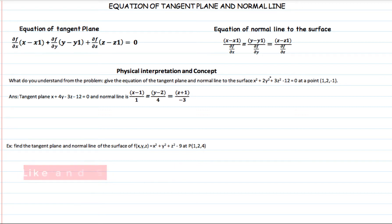I'm going to see first of all the opening statement in which basically we ask: what do we understand when the problem is that we have to find the tangent plane and the normal line to a surface which is x² + 2y² + 3z² - 12 = 0 at the point (1, 2, -1)?